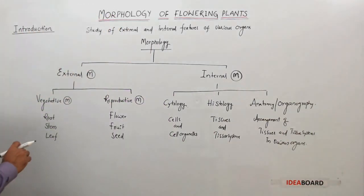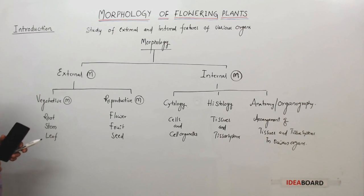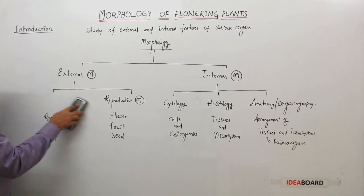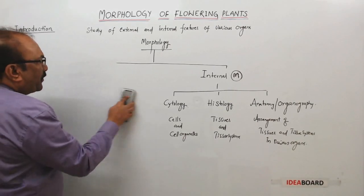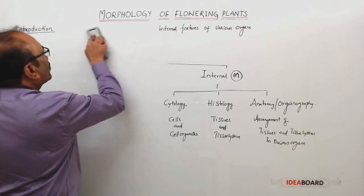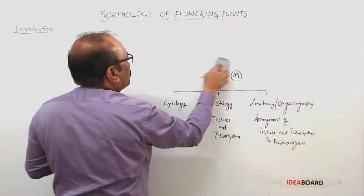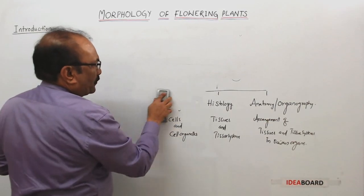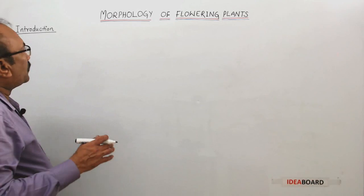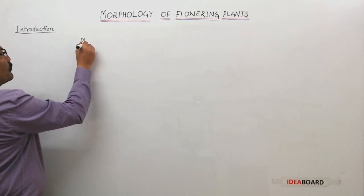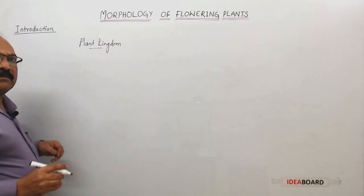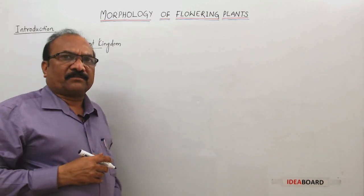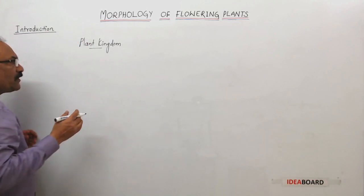Now let us look into the title: morphology of flowering plants. What are these flowering plants? To understand that, let us consider the plant kingdom. The plant kingdom has almost 5 lakh species of plants, and you will find different groups under this plant kingdom.